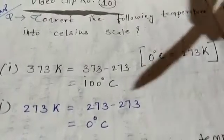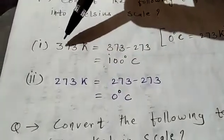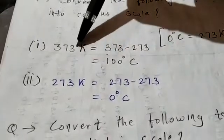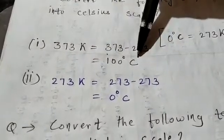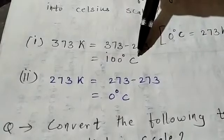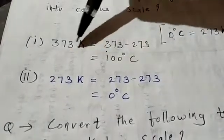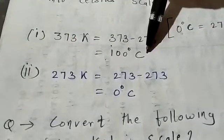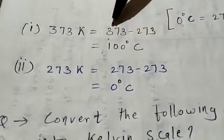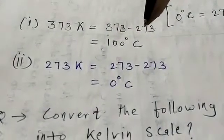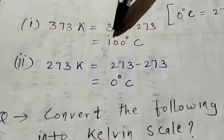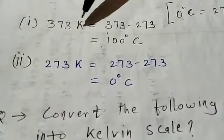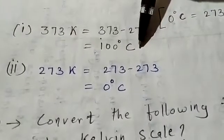For example, if you have to convert 373 Kelvin to degree Celsius — in Celsius scale, you will take the difference: 373 minus 273. How much? 100. So, 100 degree Celsius. 373 Kelvin is equal to 100 degree Celsius.